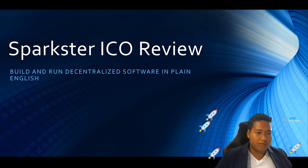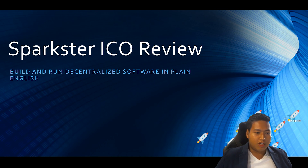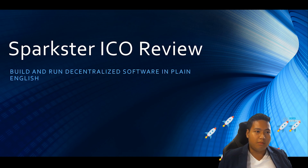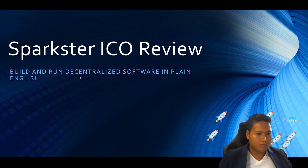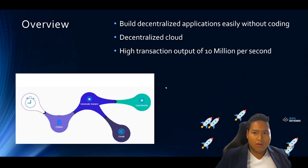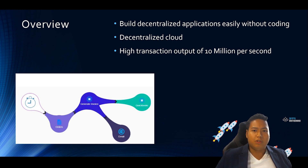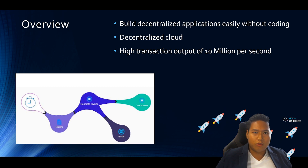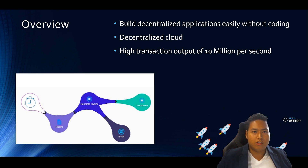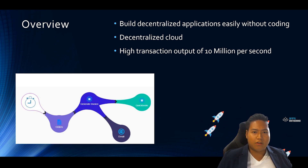So for Sparkster, it's a blockchain that allows you to build and run decentralized software in plain English. The main selling point of Sparkster would be to allow you to build decentralized applications easily without knowing any coding at all. You can do all of this in plain English without a single line of code.